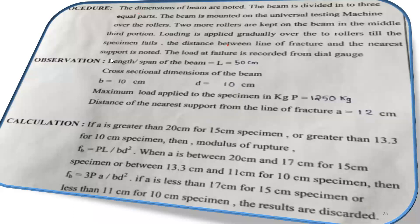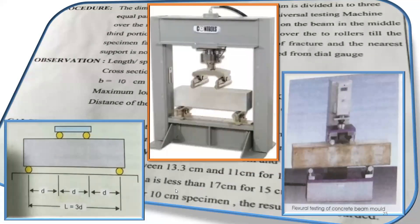We will directly get into the procedure so that everything becomes clear. This is how the two-point loading test is done. You can see the beam is cast and placed in the testing machine where a compressive load is applied. There is one roller here and a second roller — two points touching the beam — hence it is called a two-point loading test.